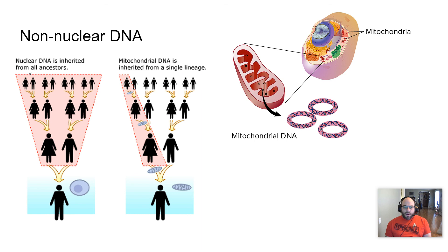And so whereas nuclear DNA is inherited from all ancestors, mitochondrial DNA and any other non-nuclear DNA is inherited from a single lineage, in this case, the female lineage. With plants, something like chloroplast would be the same sort of idea. The chloroplast would be inherited by the female or whatever the egg producing sex is for that particular organism.